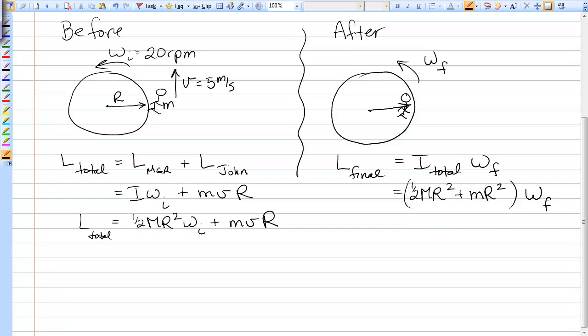And we know everything except omega F. So we're going to equate these two expressions. So we have half MR squared omega I plus M V R. This will have half MR squared, MR squared, omega F.